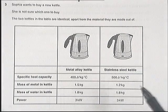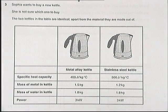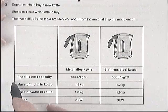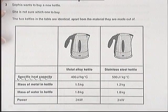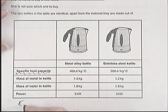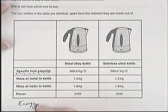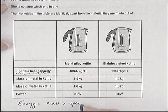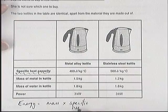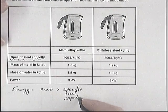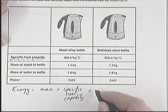This is one of the six mark questions. In physics they often give you data and you need to do some calculations or make some comparisons with that. This question has specific heat capacity, so the first thing you should do is get the equation from the front: energy equals mass times specific heat capacity times temperature change.